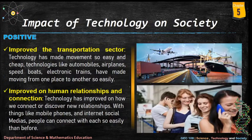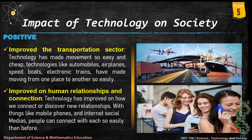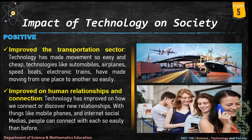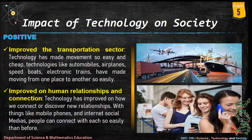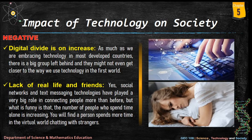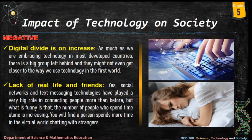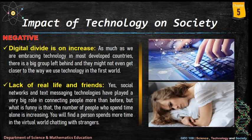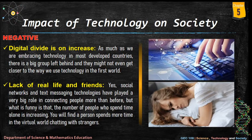Impact of technology on society — positive impact: technology has made movement easy and cheap. Technologies like automobiles, airplanes, speed boats, and electronic trains have made moving from one place to another very easy. Technology has also improved how we connect and discover new relationships — with mobile phones, the internet, and social media, people can connect with each other more easily than before. Negative impact — digital divide: as much as we are embracing technology in developed countries, there is a big group left behind. Also, while social networks and messaging connect people, the number of people who spend time alone is increasing — spending more time in the virtual world chatting with strangers.